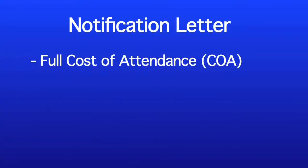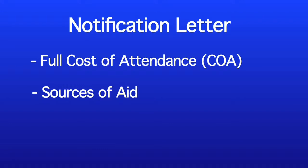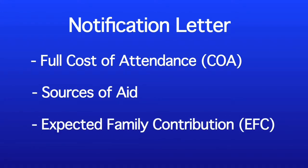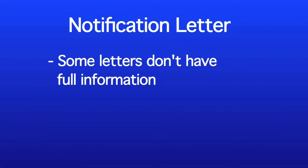Typically, a notification letter should list the full cost of attendance, or COA, for a school year, including tuition and fees, room and board, books, personal supplies, etc. The letter will usually list aid from a variety of sources, such as federal grants and loans, state aid, school or institution-based scholarships and grants, and it should also list your expected family contribution, or EFC. But some letters only list tuition and fees, not the total cost of attendance, and some don't show the cost of attendance at all, so you need to be on guard.